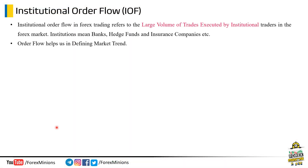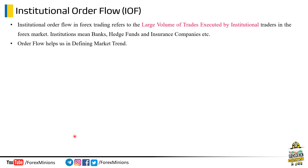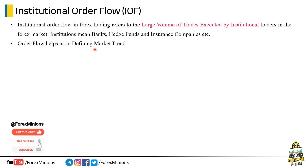To understand the order block theory, we must study institutional order flow first. Because if you do not understand institutional order flow, then order block theory will be incomplete without it. Institutional order flow in Forex trading refers to the large volume of trades executed by institutional traders in the Forex market. Big institutions mean banks, hedge funds, and insurance companies. Remember, order flow helps us in defining market trend.